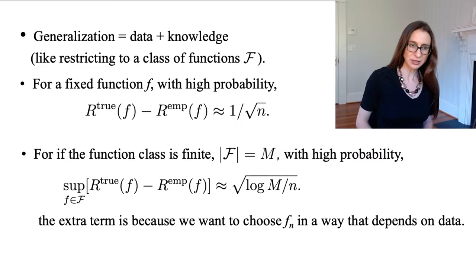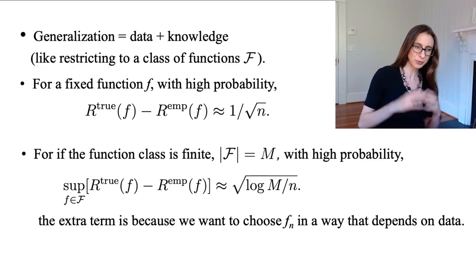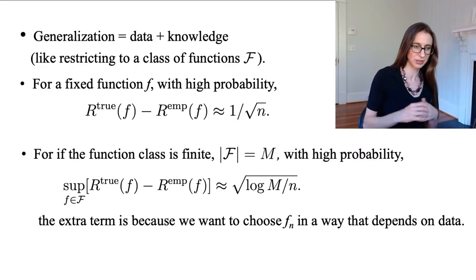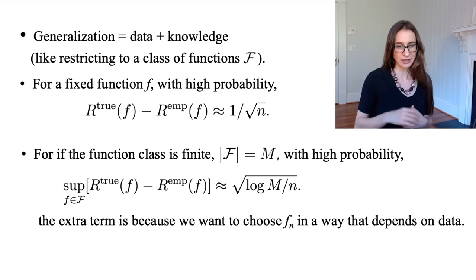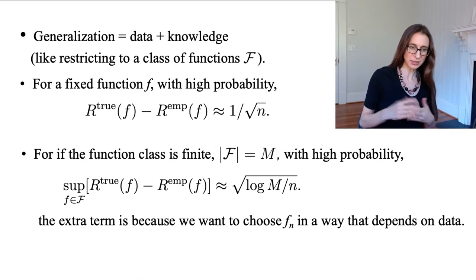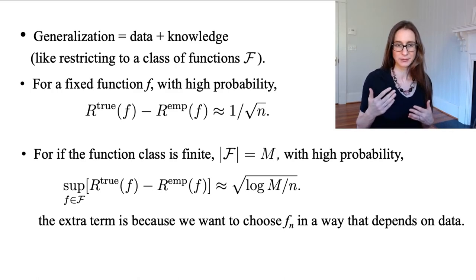And then if the function class is finite, then with high probability, the worst function in the class, the sup over all functions of the empirical and true risks differ by something on the order of root log M over n.